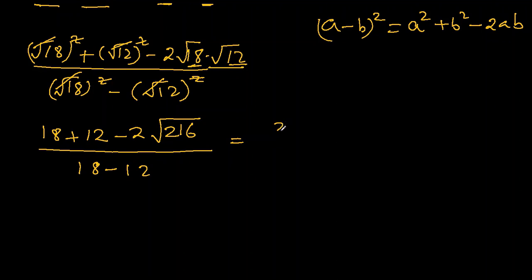So this becomes 30 minus 2 and square root 216. If you use your calculator you'll get it as square root 6, square root 6 divided by 6. So it becomes 30 minus 12 square root 6 over 6.